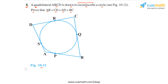This means that in this figure, AP and AS will have the same length. AP is this segment and AS is this segment. They have the same length because both are tangents drawn from A to the circle. Similarly, BP and BQ will have the same length — BP is this segment and BQ is this segment — because they are the tangents drawn from B to the circle.